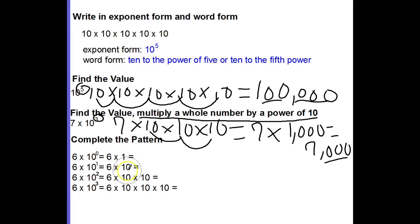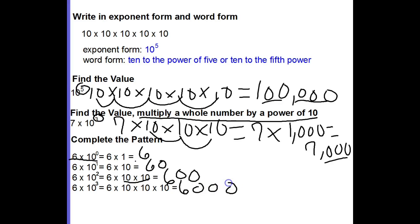Sometimes you may be asked to complete a pattern. When looking at 6 times 10 to the 0 power, since 10 to the 0 power equals 1, we have 6 times 1 equals 6. Then 6 times 10 to the first power is 6 times 10, which is 60. For 6 times 10 to the second power, that's 6 times 10 times 10, giving us 600. And 6 times 10 to the third power is 6 times 10 times 10 times 10, which gives us 6,000.